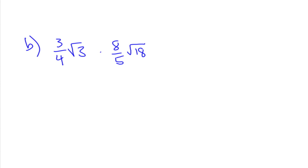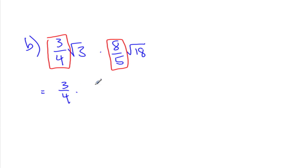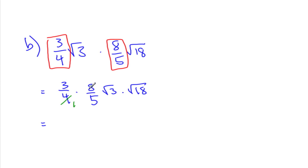So doing this, Mr. Cole, what do you think we should do first? We're going to treat the fractions and the surds separately. So let's multiply the two fractions together. I'm going to rewrite it as 3 over 4 times 8 over 5 times root 3 times root 18. We can simplify these fractions a little bit before we multiply them — the 4 becomes a 1 and the 8 becomes a 2, because 8 over 4 is the same as 2 over 1. So when I multiply it now, I have 3 times 2 is 6 over 5 times 1 is 5.